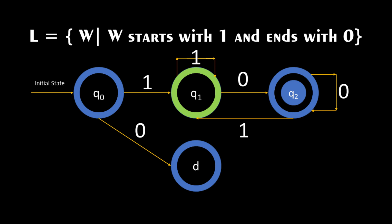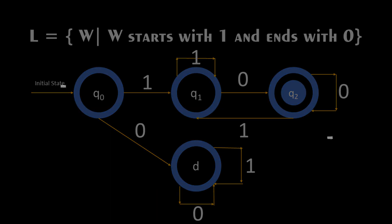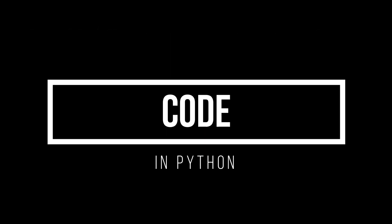Finally, we set the transition for the dead state D. Since the program terminates at D, there are no possible transitions, and for any input the transition returns to D itself. This is the state transition chart for the given problem. For a given string input, if we arrive at the final state we accept that string, otherwise we reject it. Now let's code the same in Python.